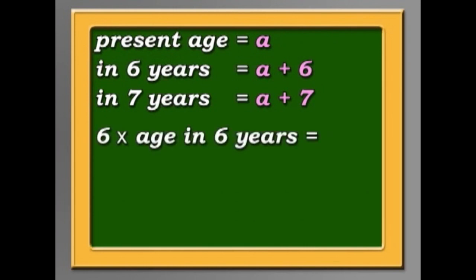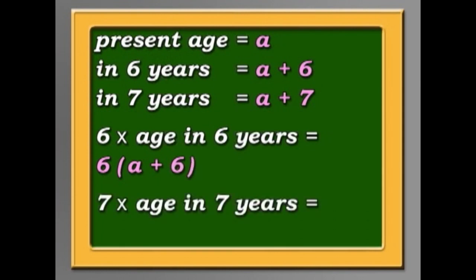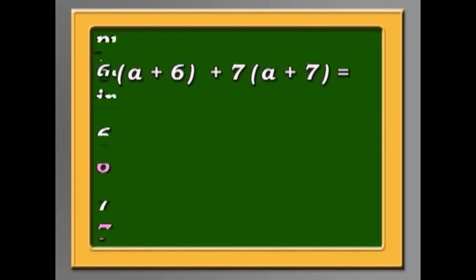So six times my age in six years will be six bracket A plus six bracket. And seven times my age in seven years will be seven bracket A plus seven bracket. And if we add those together, we get 14 times my age, which is 14A.